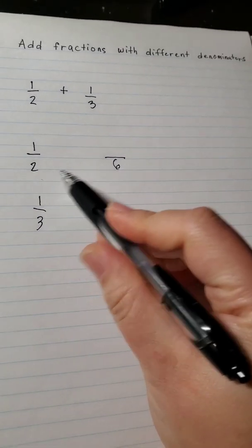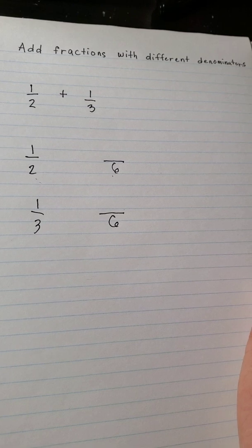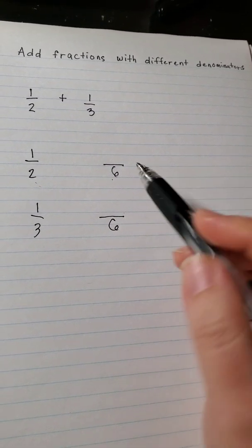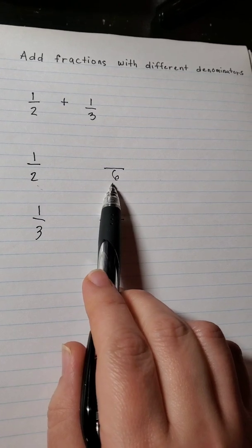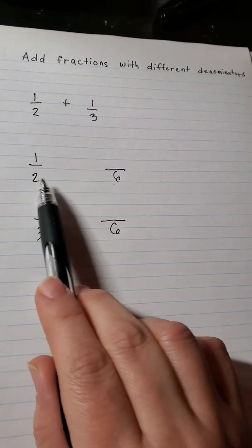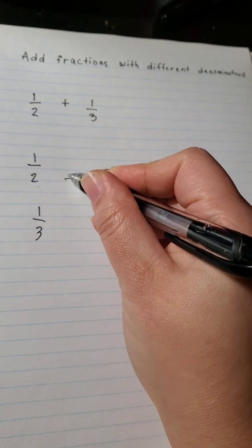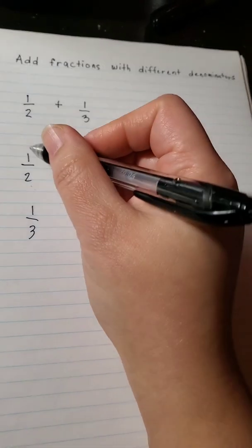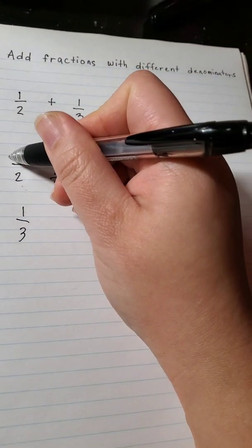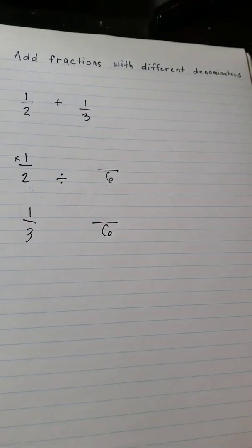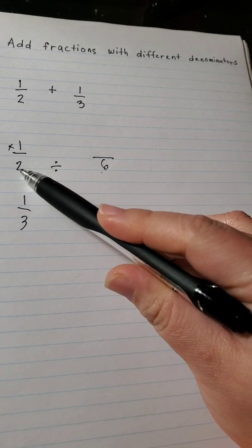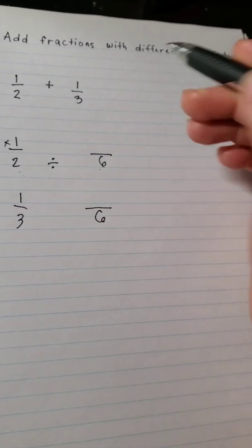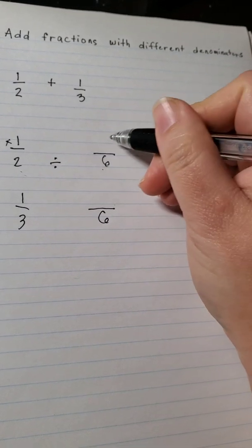6 can divide 2, right? So what you need to do is use number 6. 6 divided by 2 is 3, and then after that you multiply with your numerator. So 6 divided by 2 is 3 times 1 equals 3.